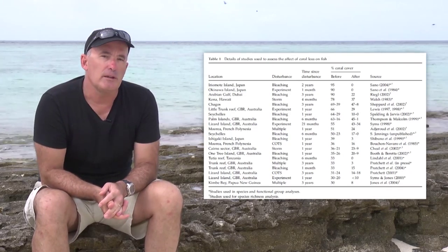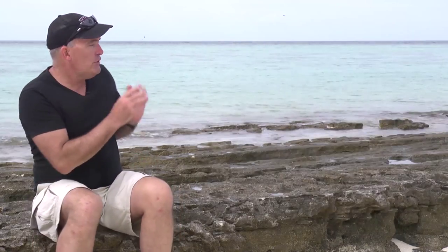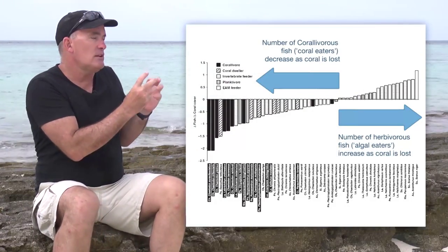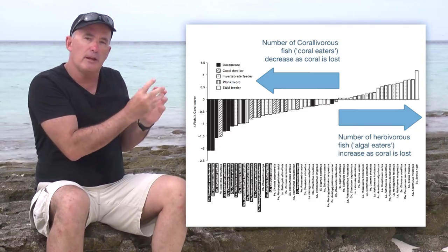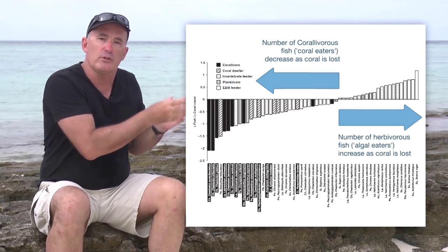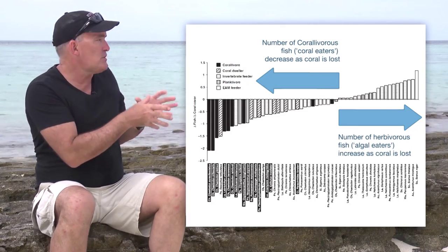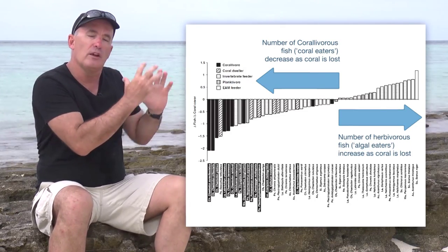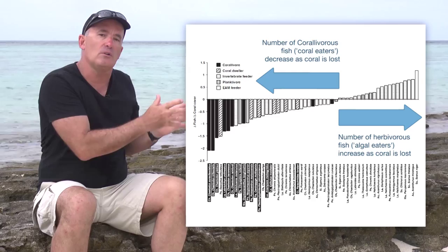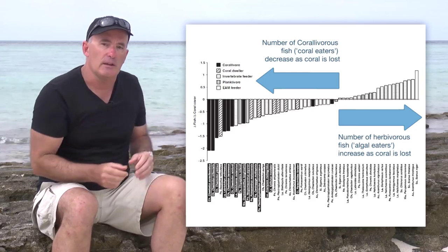Noticeably, when reefs lose coral and structure, they tend to be populated by more herbivorous fish, and those fish which are specialists in terms of feeding on coral disappear.